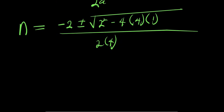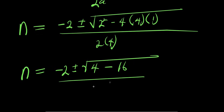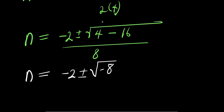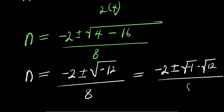So inserting them into the formula: n equals negative 2 plus or minus square root of 2 squared minus 4 times 4 times 1, divided by 2 times 4. That gives n equals negative 2 plus or minus square root of 4 minus 16, divided by 8. So that is square root of negative 12, divided by 8.